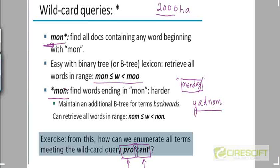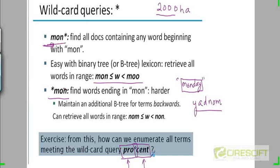Once you get the terms starting with PRO and once you get the terms ending with CENT, you take an intersection of both those term lists to get all the terms that satisfy this pattern. If you are interested in documents containing such terms, you take those resulting terms, follow their individual postings lists, and then take an OR of those postings lists.